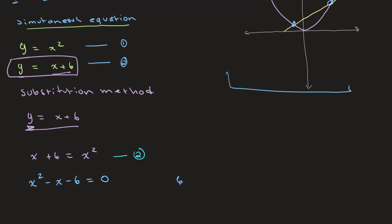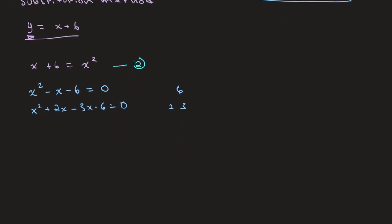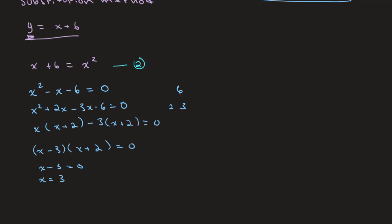Rearranging, we get x squared minus x minus 6 is equal to 0. Factorizing using 2 and 3, this is x squared plus 2x minus 3x minus 6, which factors to x minus 3 times x plus 2 is equal to 0. This gives us x minus 3 equals 0, so x equals 3, and x plus 2 equals 0, so x equals negative 2.